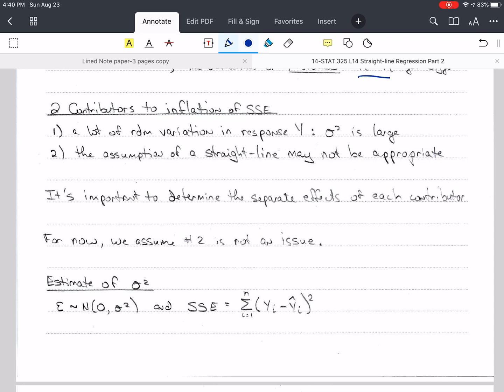So there's two contributors to inflation of the sum of squares error, or the variation. First is, if we just have a lot of random variation in the response variable y, then of course sigma squared is going to be large. And then, the second one may be that the assumption of the straight line is not appropriate. And it's really important to determine the separate effects of each of these contributors. For now, we're going to assume that number two is not an issue. In other words, we're going to say, yes, we know whether or not a straight line is appropriate. And we can usually tell that by looking at the scatter plot.